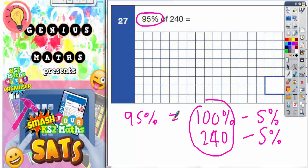The easiest way to work out 5% is to work out 10% first. Well, 10% of 240 means divided by 10, so you can just knock the zero off. So 10% of 240 is 24.